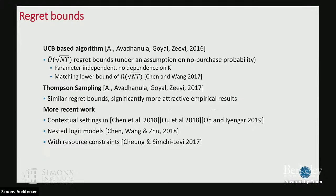For UCB or Thompson Sampling in the assortment setting, the idea extends similarly — but there are complications in getting a maximum likelihood estimate of theta, since you only observe the product that was purchased and not full feedback. For Thompson Sampling, you don't get a nice conjugate posterior, so a Gaussian approximation of the posterior is used.